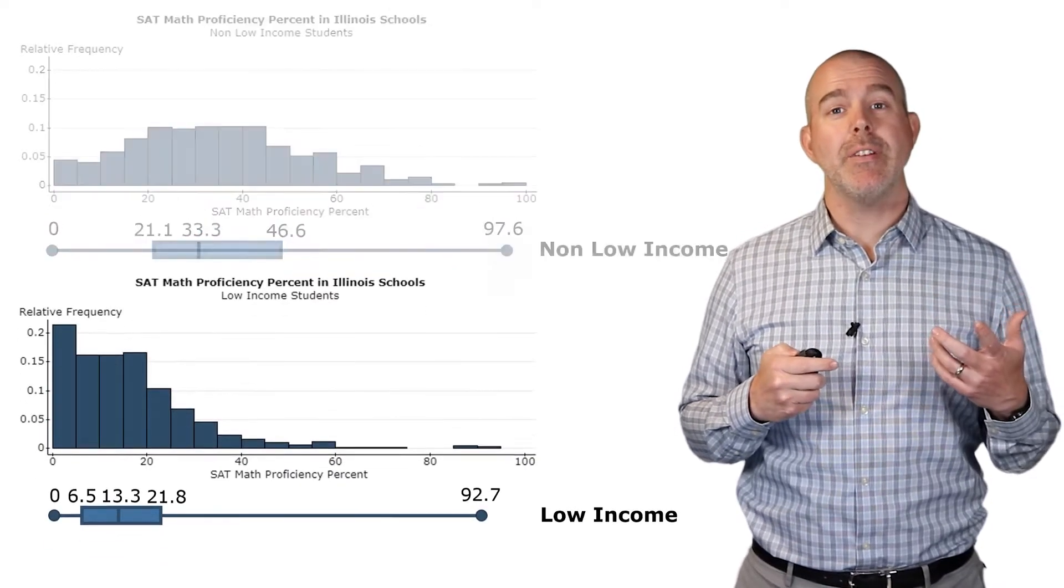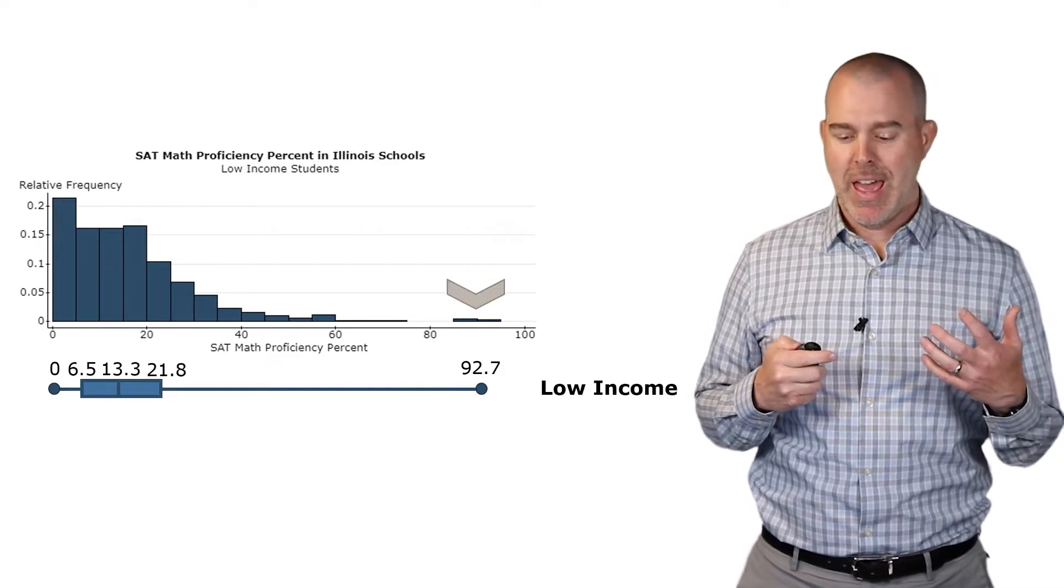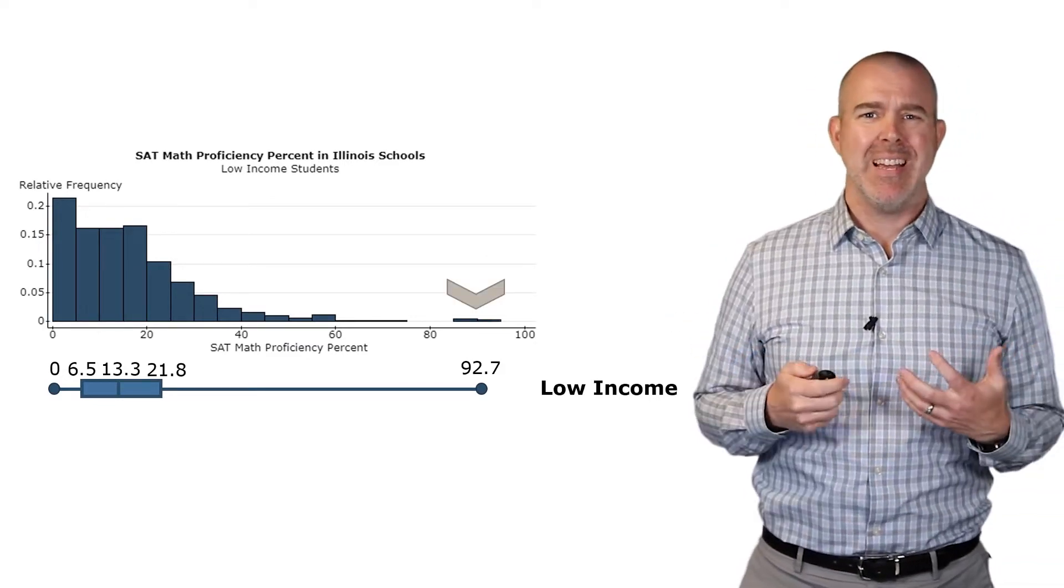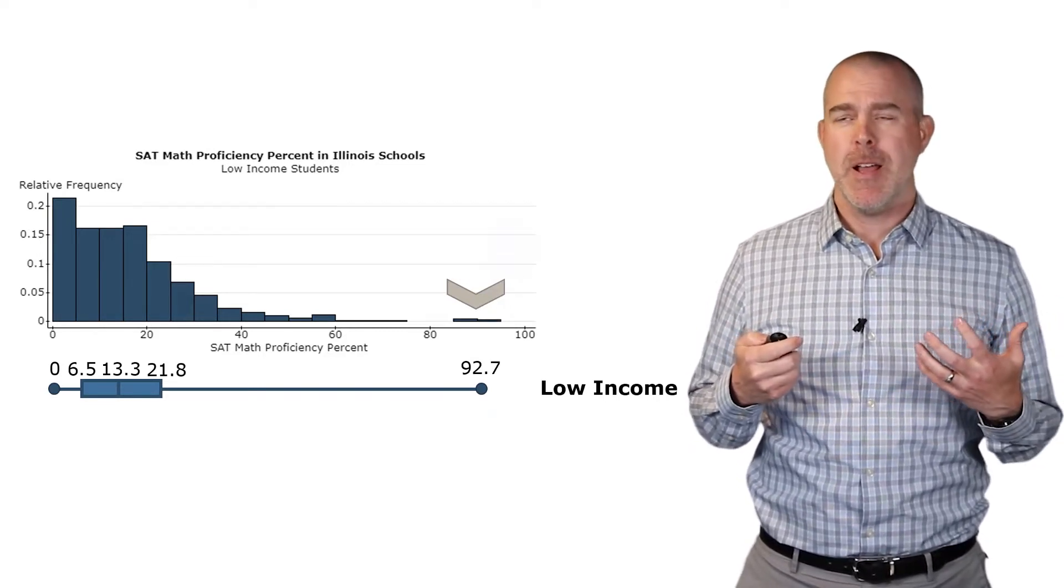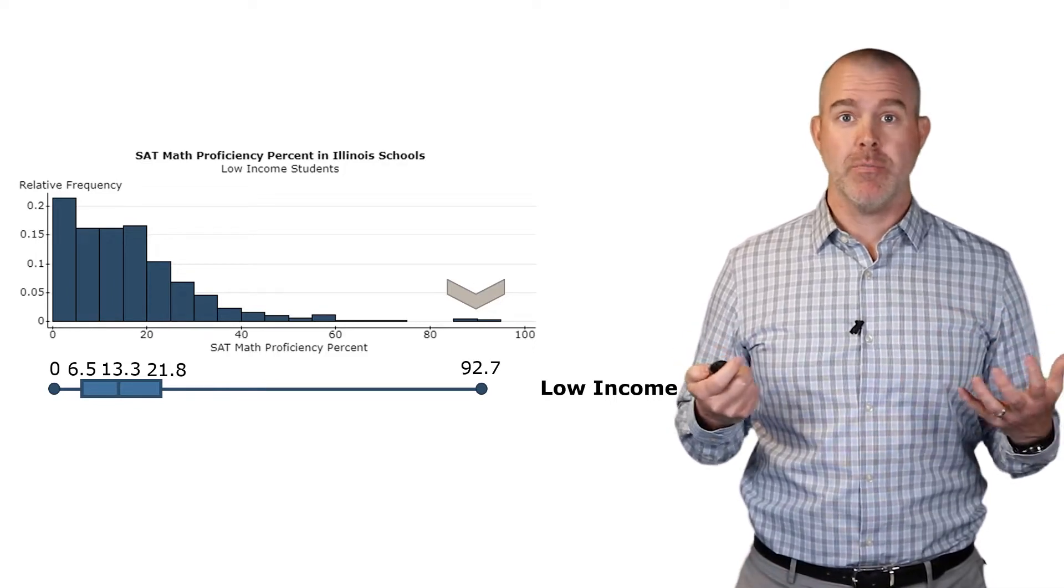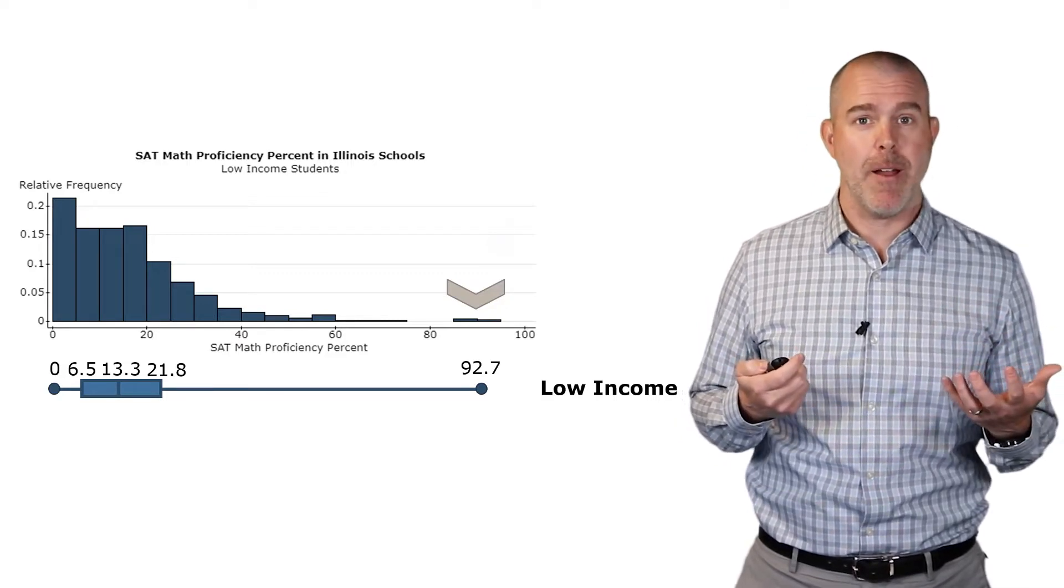Let's dive a little bit deeper into the low income students. There's this group over here way over on the right that we might describe as outliers. They're very extreme observations. The question that we might have is, how could I identify those? Maybe I don't have a histogram. How can I identify whether something is a possible outlier?